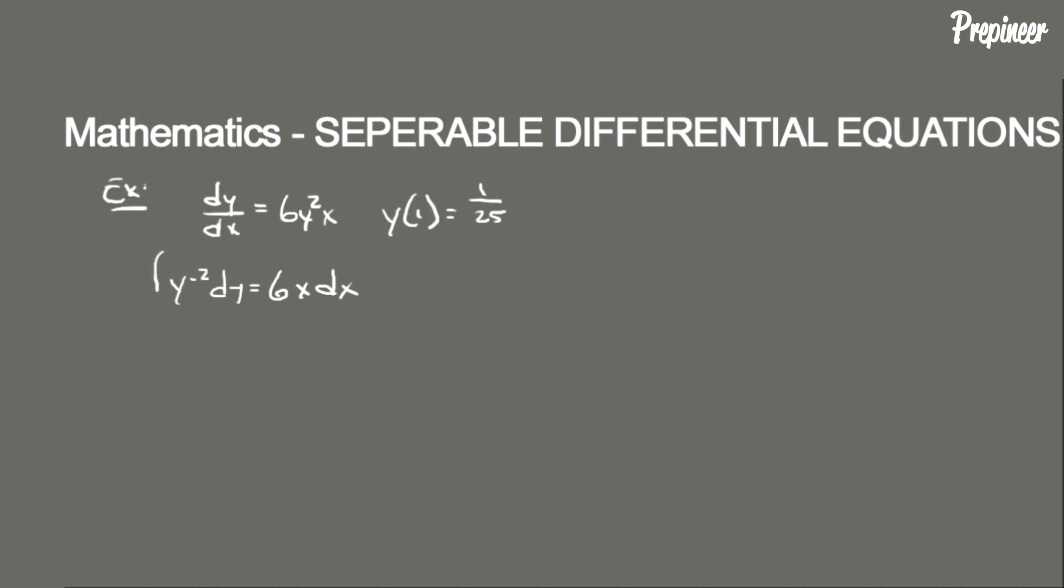Now all we need to do is integrate. So we integrate both sides and we find that this comes out to be 1 divided by y equals 3x squared plus c. So now we have an implicit solution.